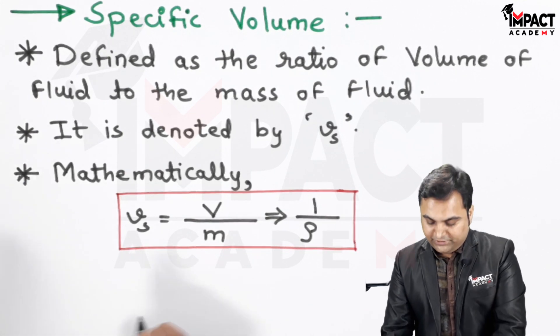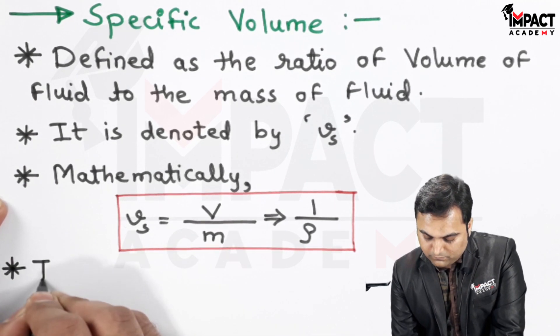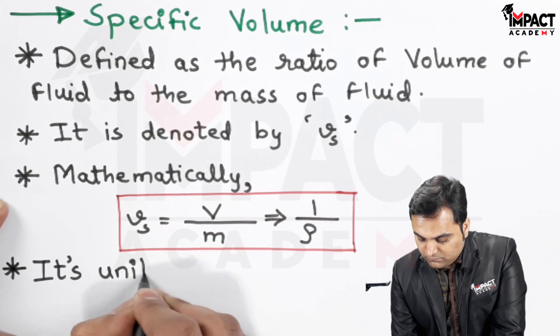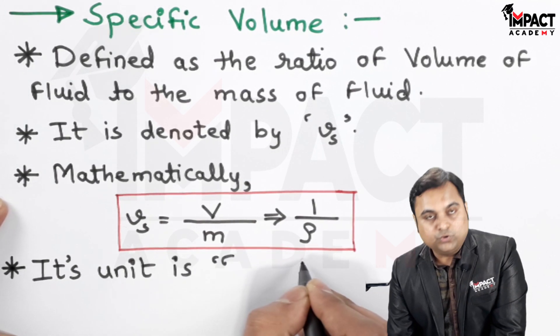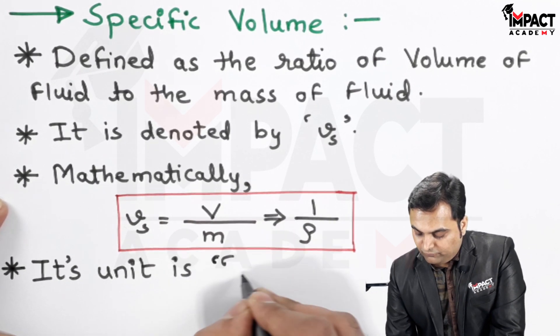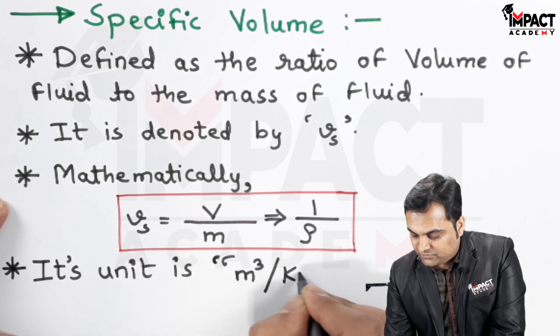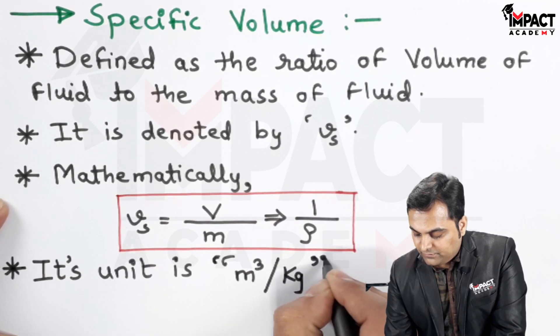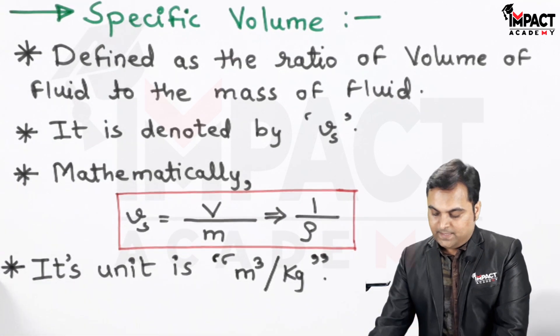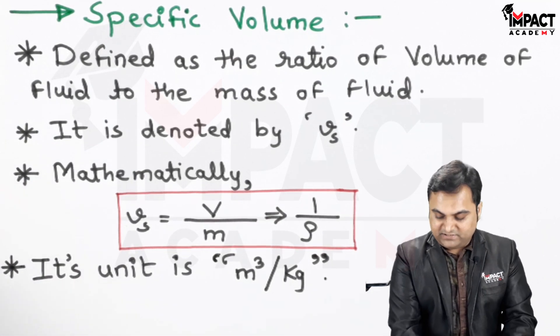Then I'll write the unit here. Its unit is, the unit of volume is meter cube and mass is in terms of kg, so it is meter cube per kg. And I'll just quickly give an example.